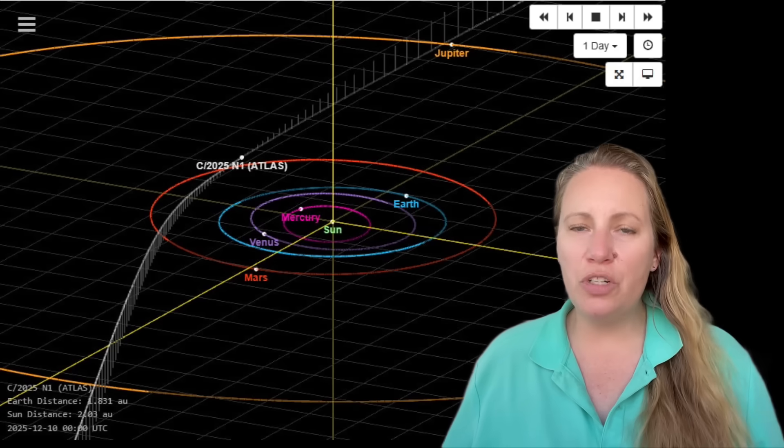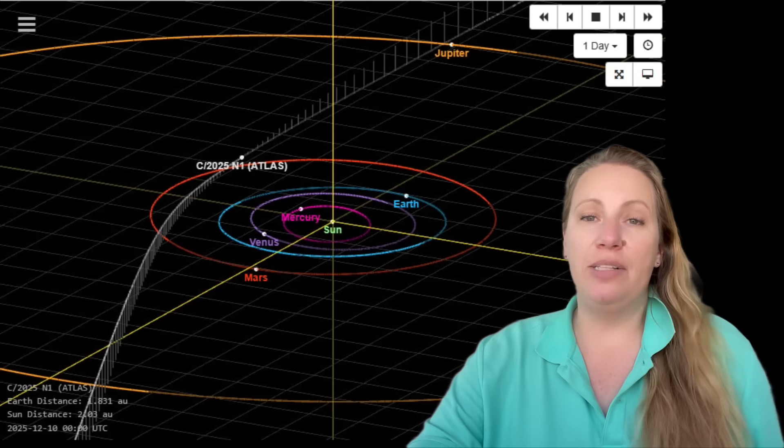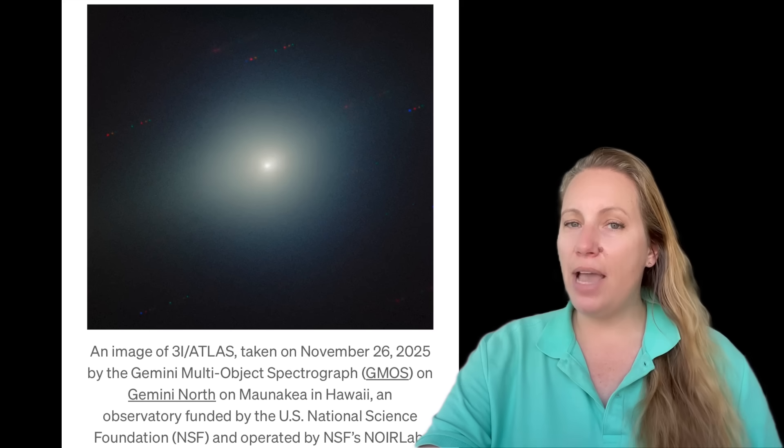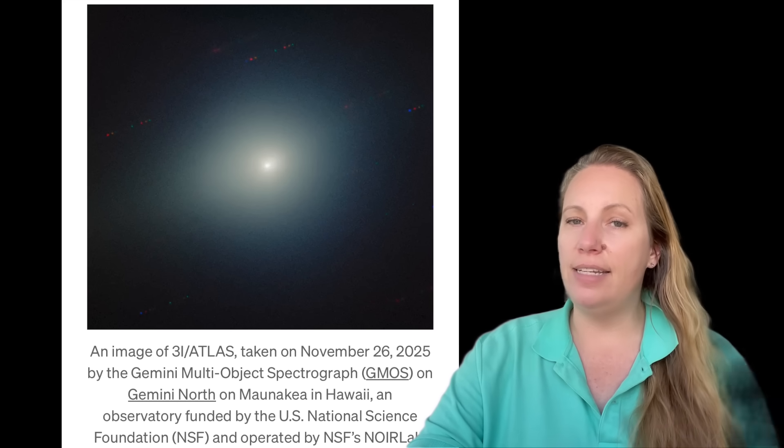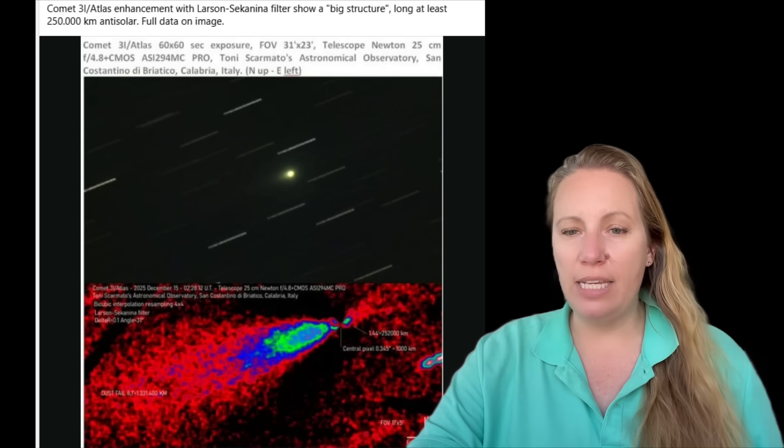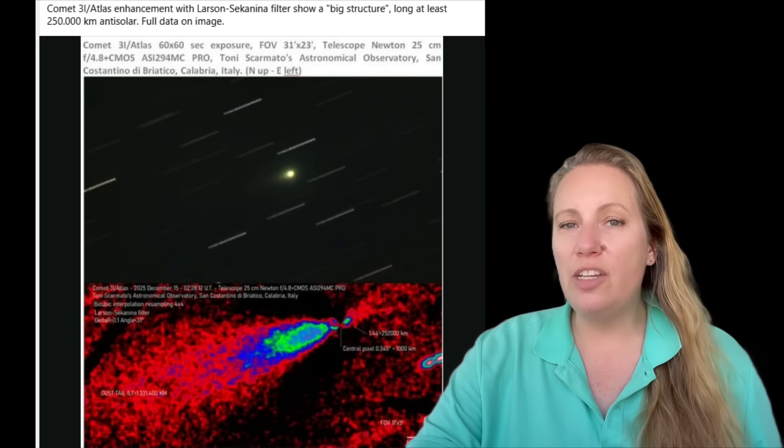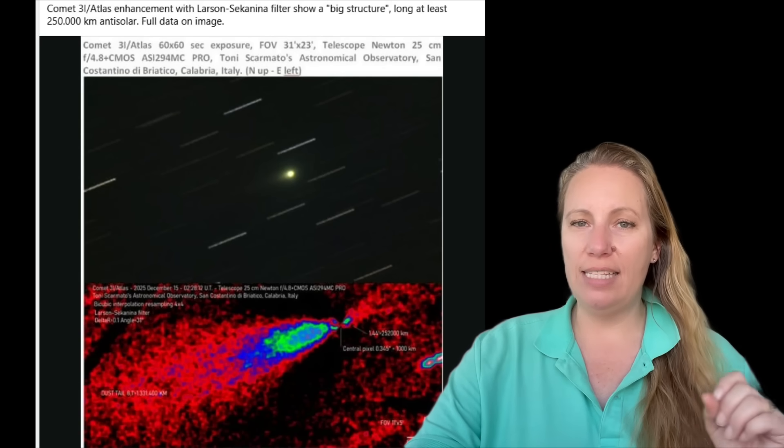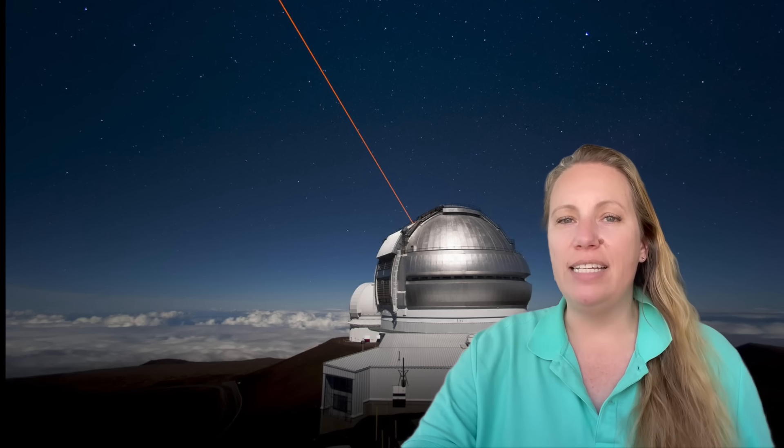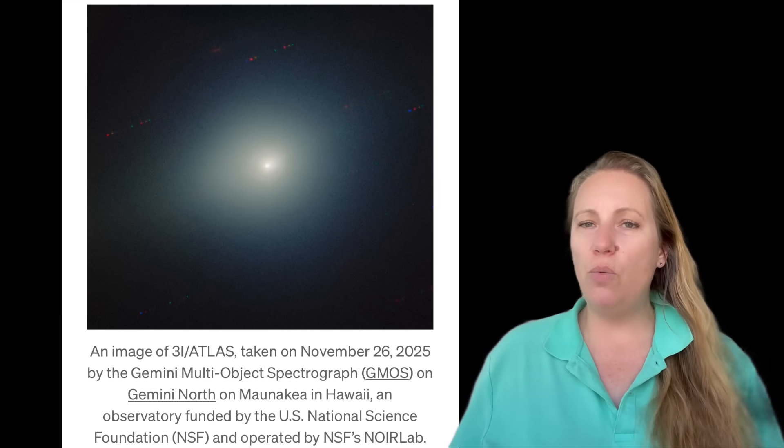Some observers looked at newer images of 3i Atlas and they said the tail's gone. But that conclusion is incorrect. 3i Atlas did not lose its tail. It still shows the anti-tail, clearly visible, especially in this last picture and in other pictures when you look at the data correctly. What changed is our viewing geometry, not the object itself. And that's the interesting part.